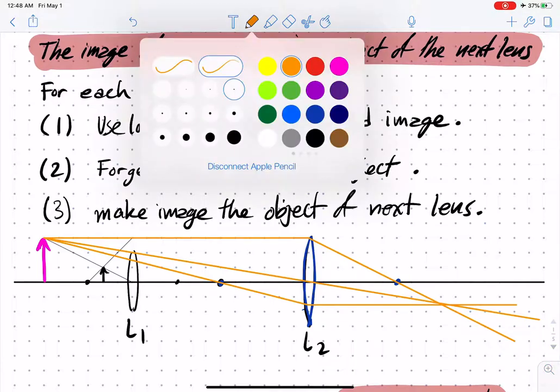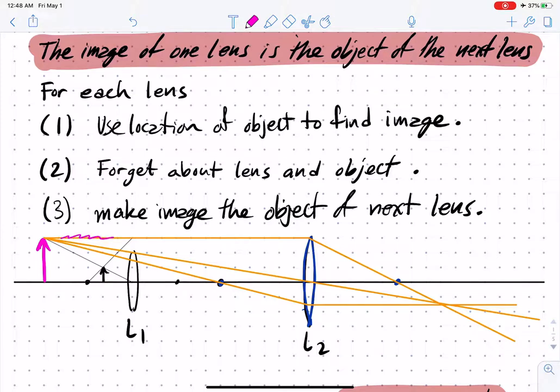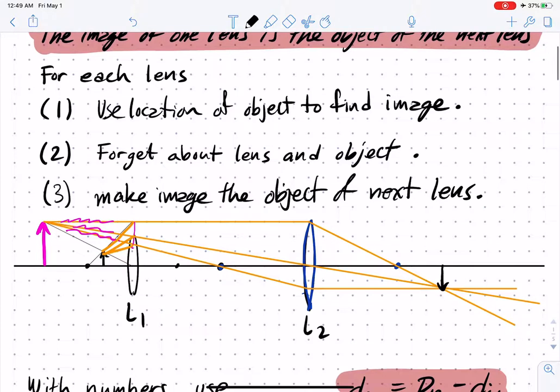Now again, I'm going to stress the light doesn't actually follow this. It actually came from back here. So we've successfully found our new image. In this case, that's the last image so we can stop. If there were further lenses, we would just continue.